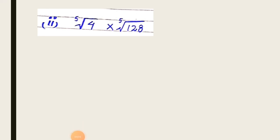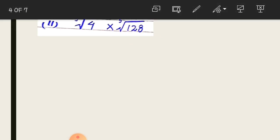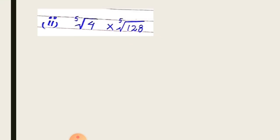So let's start part number 2 of question number 5. Here we have two radicals, and both are radicals of order 5. First is the radical of order 5 having 4, and second is the radical of order 5 having 128. So first of all we have to write these radicals into the exponential form.